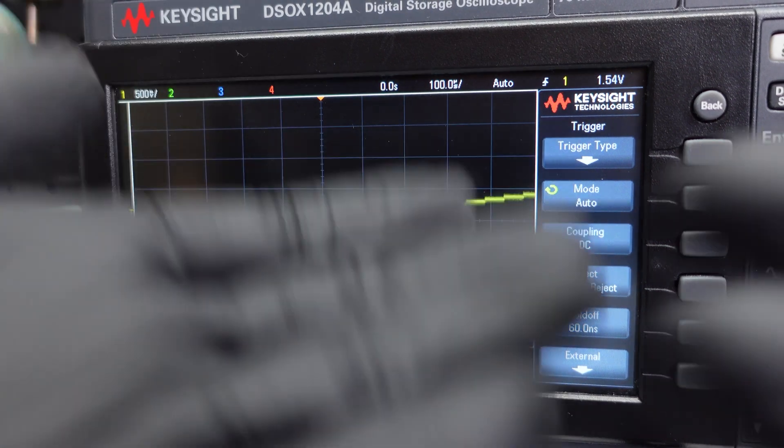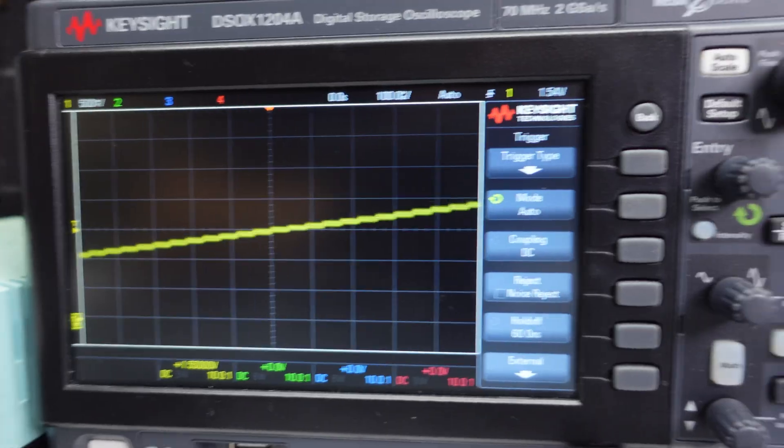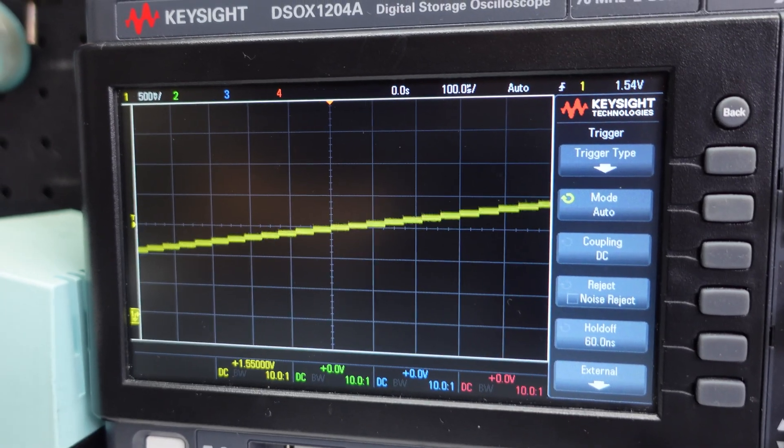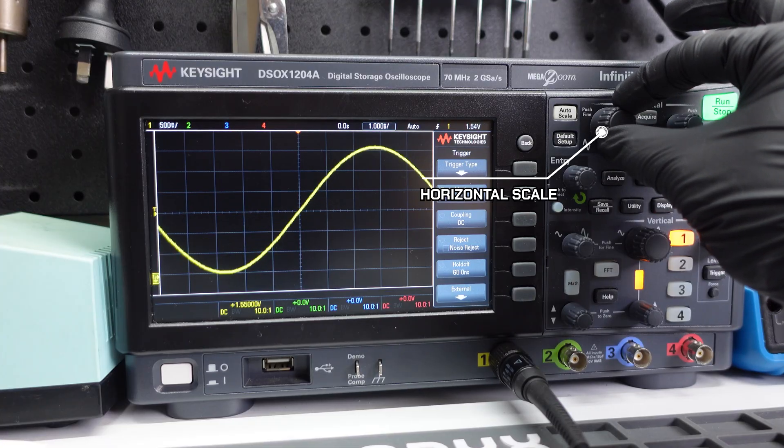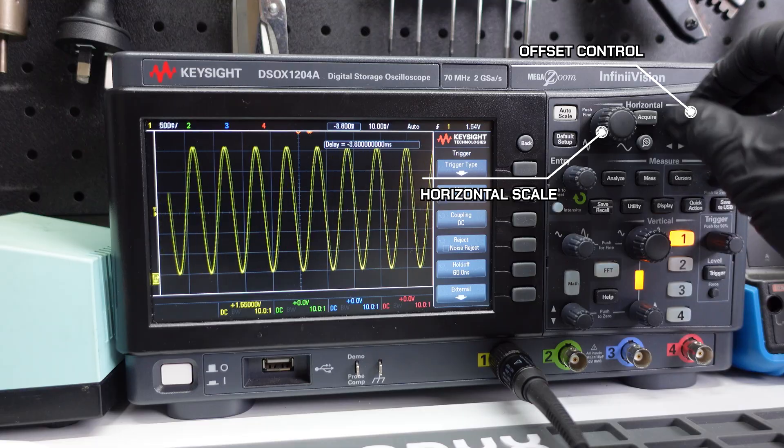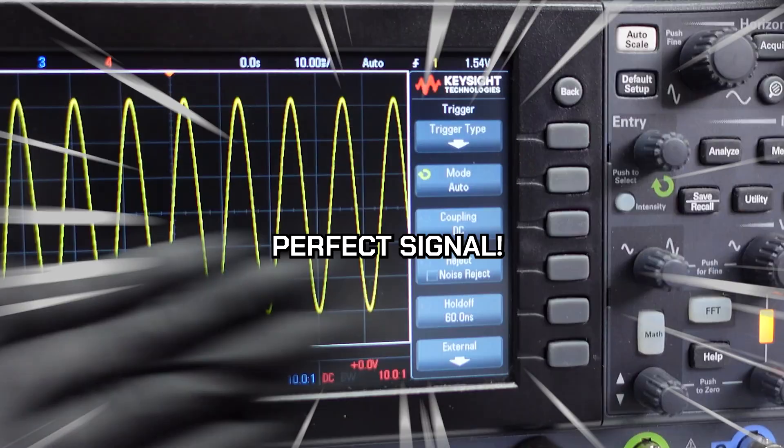But the only thing is that this looks like a line, not a sine wave. So let's adjust the horizontal scale. If the sine wave looks stretched out or too compressed, adjust the horizontal scale by turning the big knob labeled horizontal. You can also offset the wave by turning the little knob. Cool. And that's a sine wave.